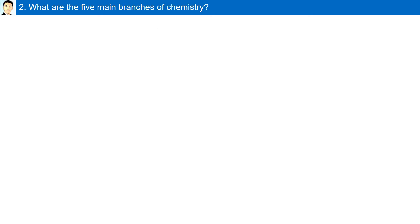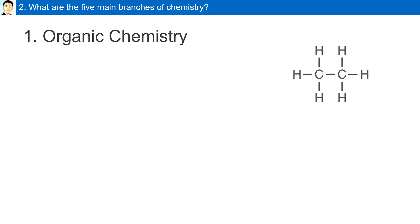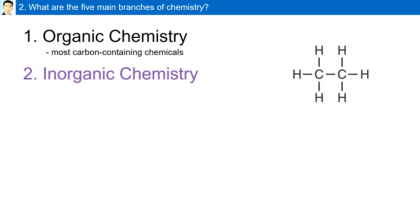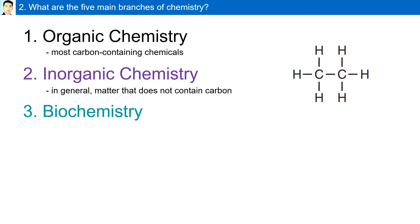What are the five main branches of chemistry? First, organic chemistry — this focuses on most carbon-containing chemicals. Second, inorganic chemistry — which concerns, in general, matter that does not contain carbon.